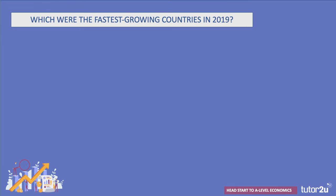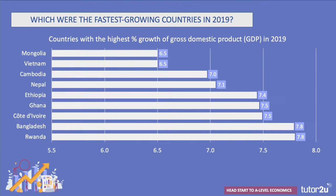Here's another question: which were the fastest growing countries in 2019? Top of the tree was Rwanda with growth of just under 8%. Bangladesh was right up there, along with Ivory Coast, Ghana, Ethiopia, Nepal, Cambodia, Vietnam, and Mongolia — all growing at more than 6% per year. There is an interesting concept called the 'seven percent club': if you can grow by 7% per year, your national output will probably double every ten years or so, making it a badge of honour for many fast-growing countries.